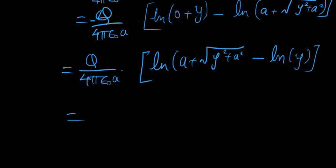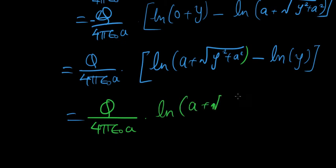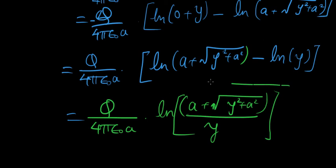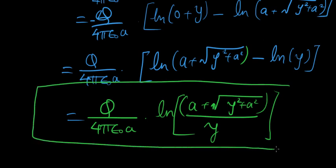So let's get back to our equation. Natural log of something minus natural log of another thing is pretty simple, right? It's just that over that. So like we did in part A, q over 4 pi epsilon naught A times natural log of A plus square root of y squared plus A squared over y. This is the answer for potential at point R.